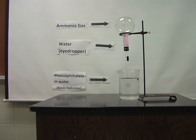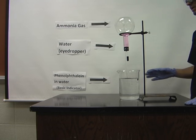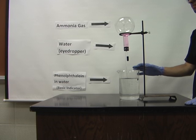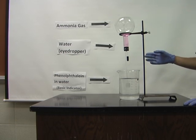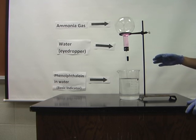happens. As you can see, the flask is filling with water and the water is turning pink. What is happening is when I squirt the water into the flask, the ammonia gas is very hygroscopic, meaning it dissolves in water easily.